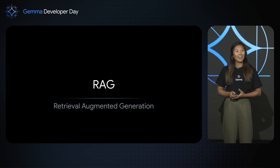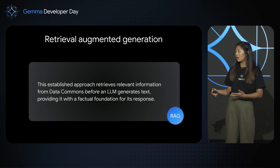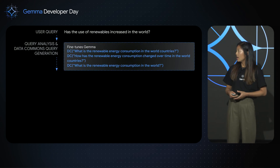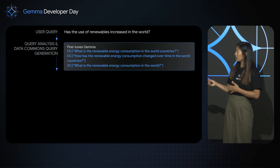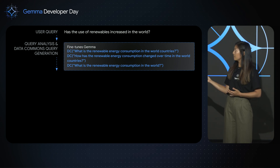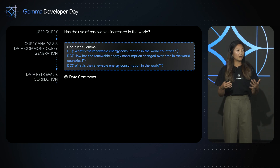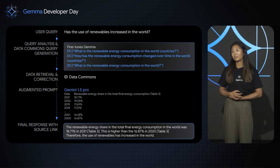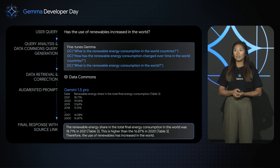Next, let's look at Retrieval Augmented Generation. In this approach, we retrieve relevant information from Data Commons before having the LLM generate an answer, so the LLM has a factual foundation for its response. Using the same query — 'Has the use of renewables increased in the world?' — we pass the question to our fine-tuned model, which gives a list of queries that Data Commons' natural language interface can understand. We fetch the data in the form of data tables from Data Commons and feed that data, along with the original user query, to an LLM asking it to respond using the fetched data. The LLM can choose to use numbers from the tables and, if it does, will also return the table along with the response.